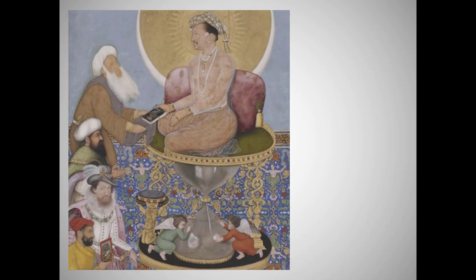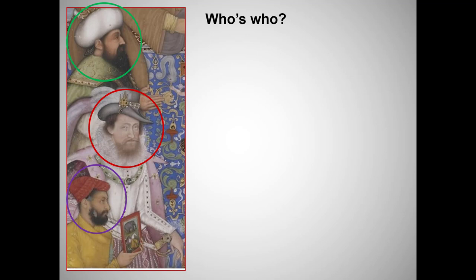The work also exhibits clear hierarchy of scale. The sheikh, it's true, is bigger than the other kings, but Jahangir is bigger than the sheikh. The sheikh also receives the gift in his shawl, not in his hand — he observes royal protocol by refusing to touch the royal personage.